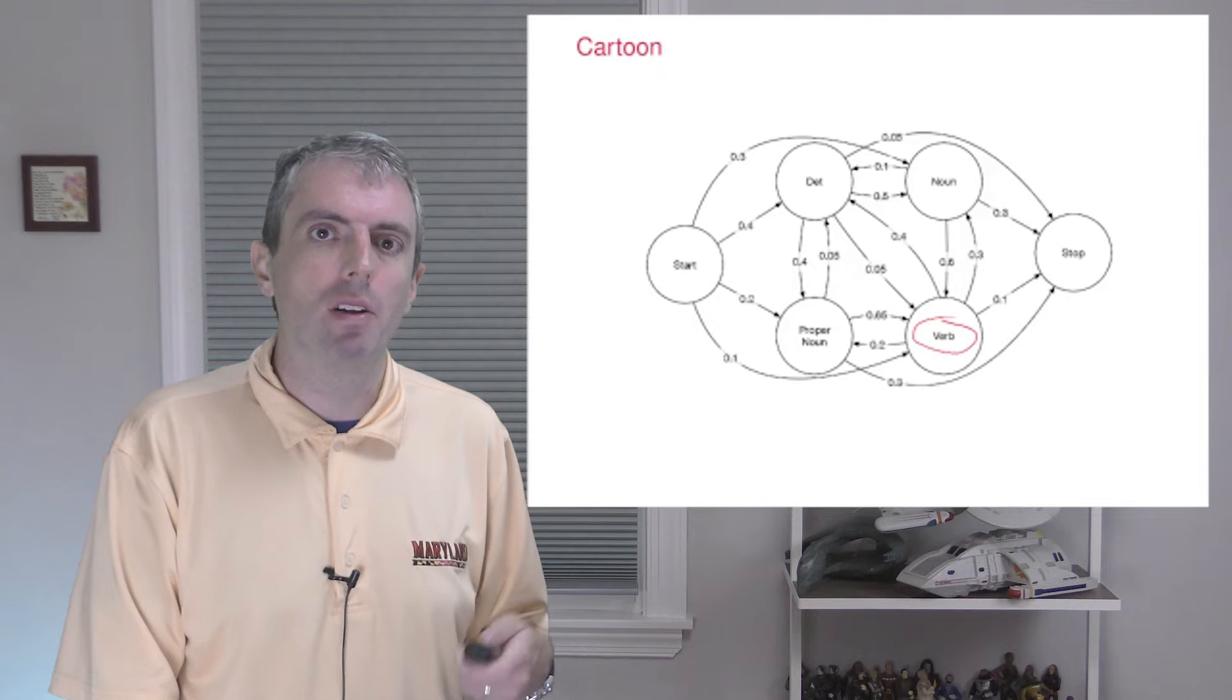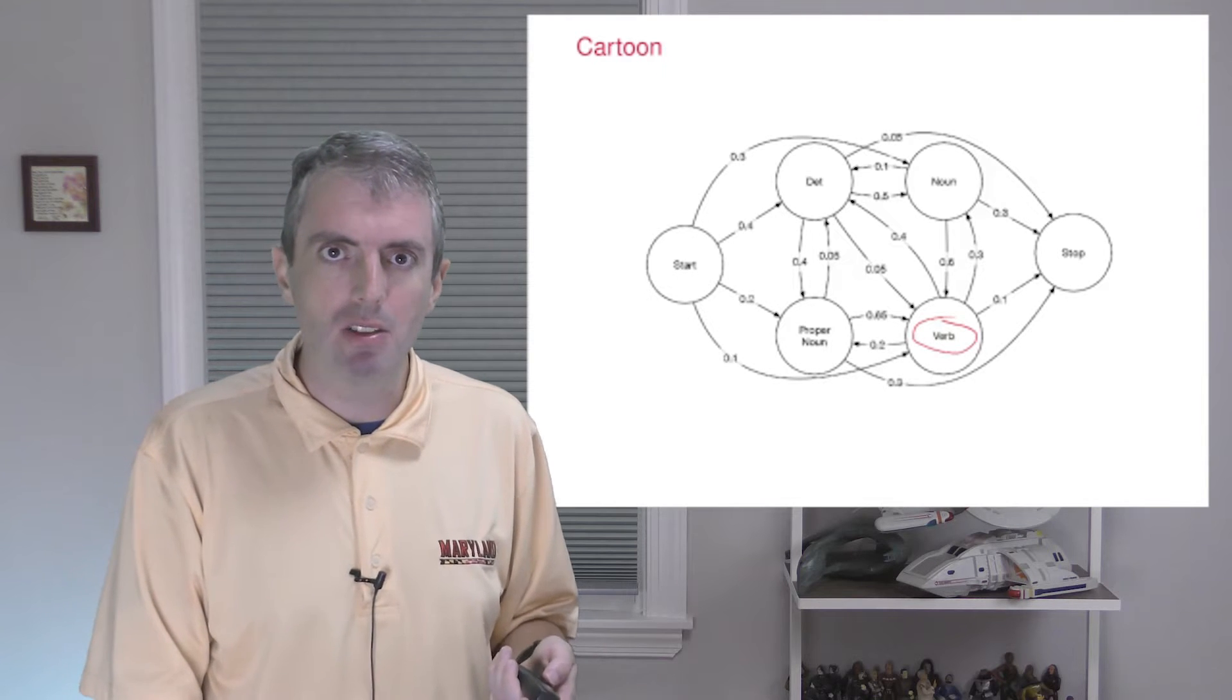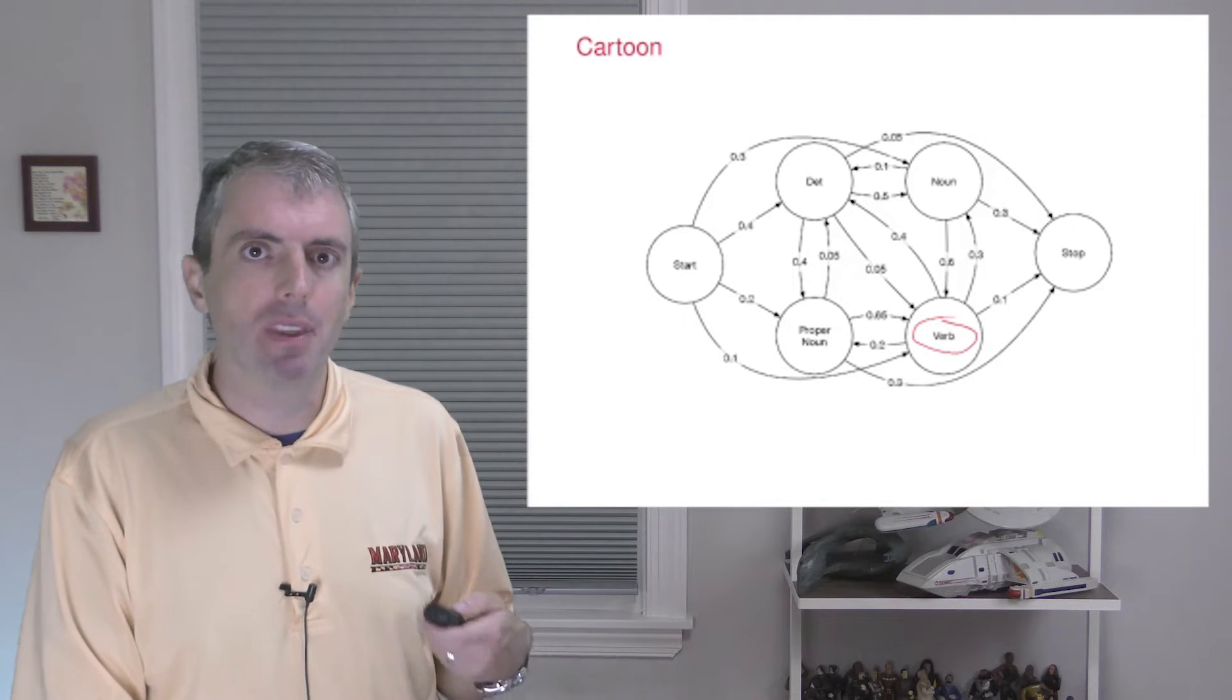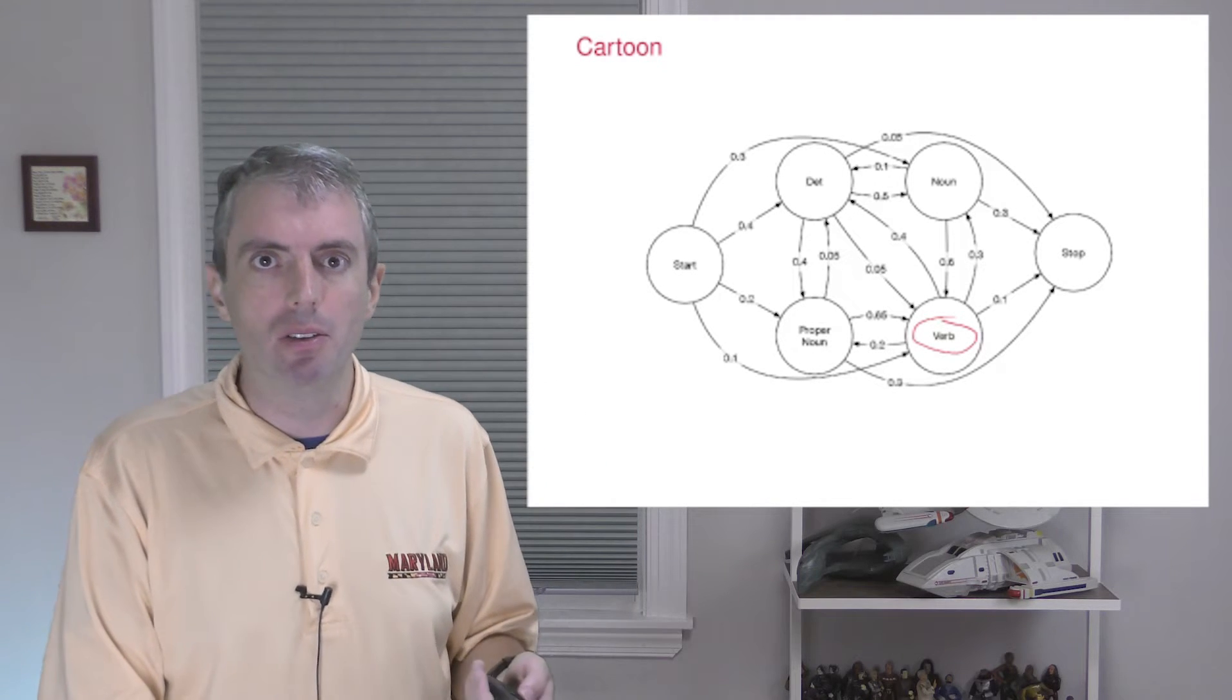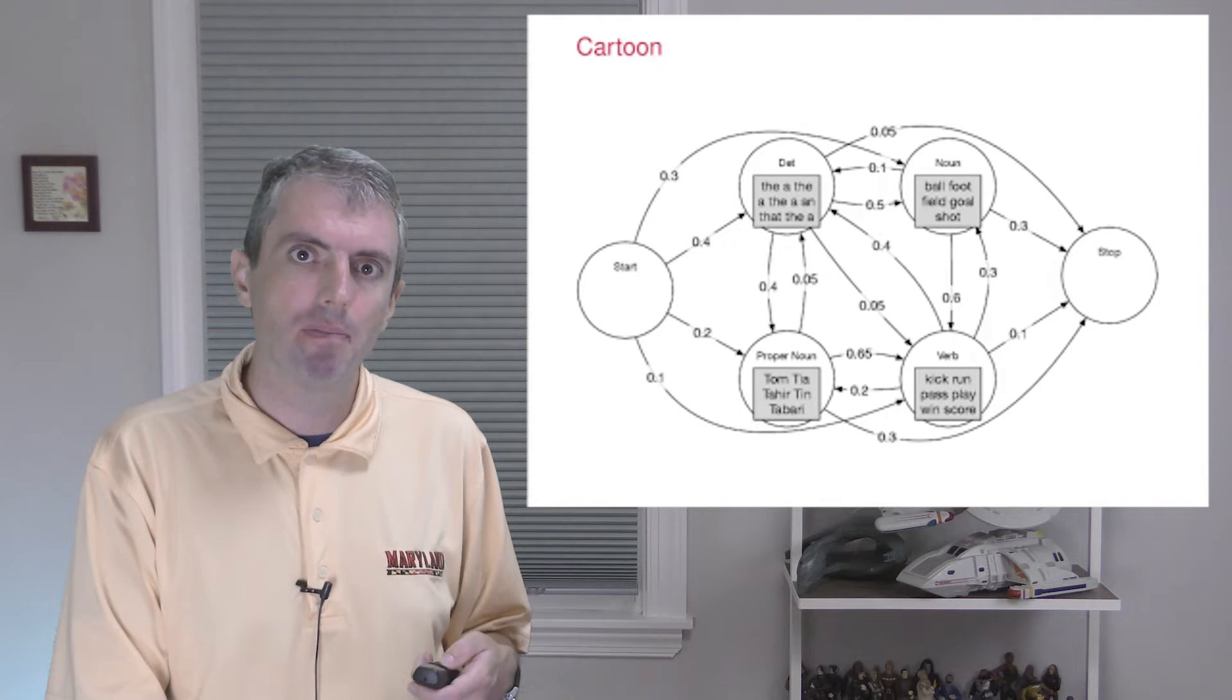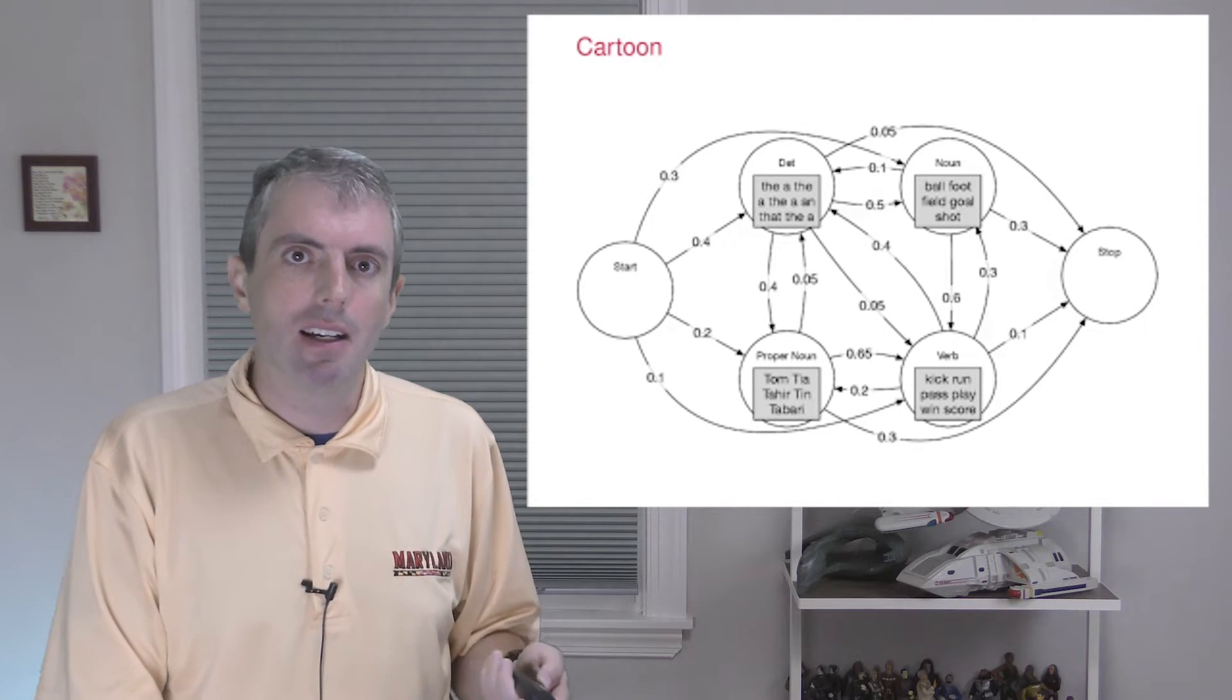We also need to generate some words to go along with these parts of speech. Each state has a distribution over words. So once we're in the determiner state, there are only a couple of determiners you can use. This is called a closed class part of speech. It's going to be a, the, or maybe an.